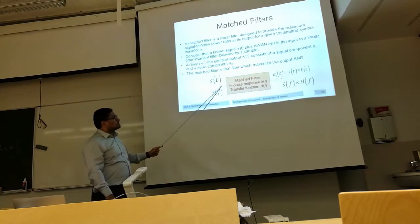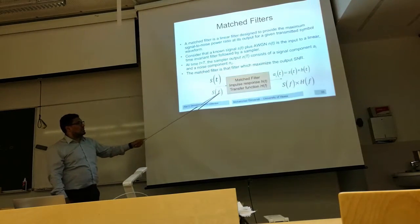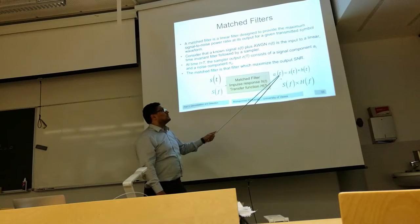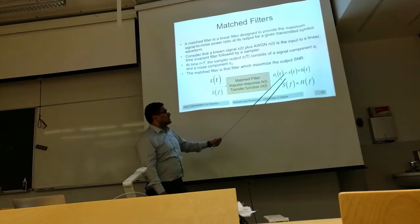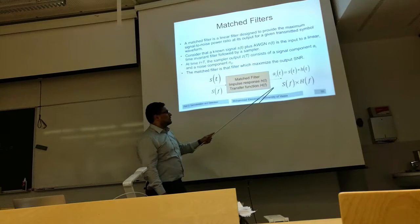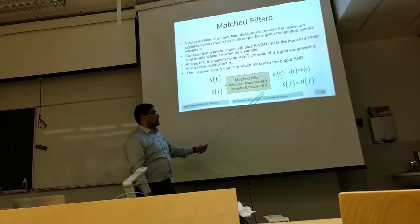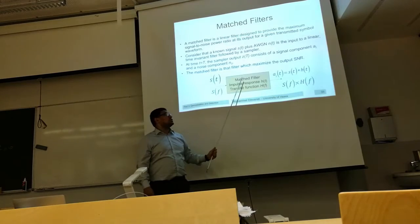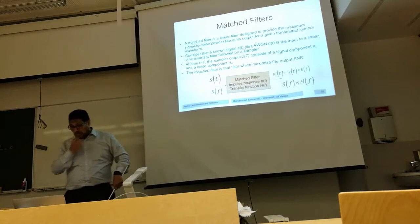The matched filter concept: the input is S(t) with frequency transfer function S(F). It enters the matched filter, producing output Ai(t) = S(t) ∗ h(t), or in frequency domain A(F) = S(F) × H(F). Our question is: what is the optimum H(F) that maximizes the output signal-to-noise ratio?